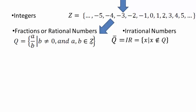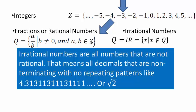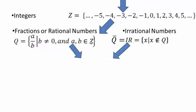Irrational numbers are the complement of rational numbers — all numbers that are not rational numbers. Decimal numbers that are not rational numbers are called irrational numbers. Irrational numbers are all decimal numbers that are non-terminating with no repeating pattern, like square root of 2.